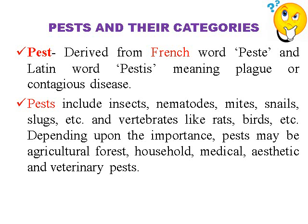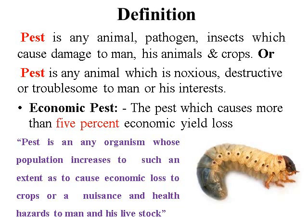Pest also includes vertebrates like rats, birds, animals, etc. Depending upon the importance, pest may be agricultural, forest, household, medical, aesthetic, or veterinary. So a pest is any kind of organism — insects, nematodes, mites, snails, slugs, or many organisms other than insects. Pest is any animal or pathogen or insect which causes damage to man and his animals or his crop. Or a pest is any animal that is nauseous, destructive, and troublesome to man or his interests. Then it is termed as a pest.